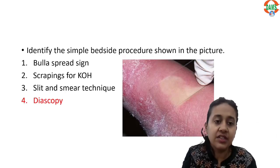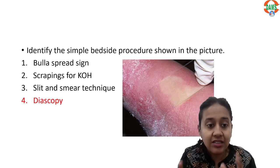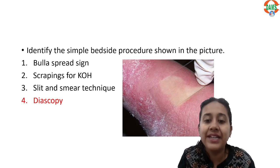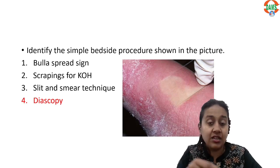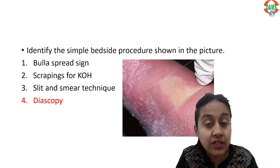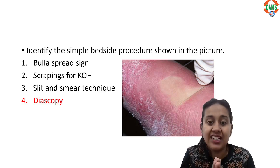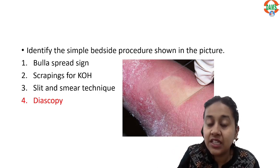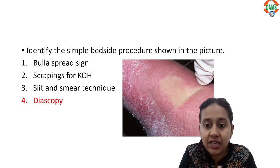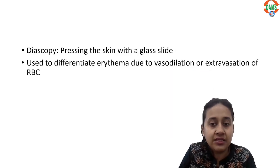The last question asks you to identify the simple bedside procedure shown in the picture. This is an example of a diascopy test. Diascopy is very simple — you take a glass slide and press it on the surface of the skin. If the underlying skin is completely blanched, this indicates pure erythema. But if there is incomplete blanching, this indicates that the blood vessel is leaky and there is extravasation of RBCs.